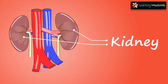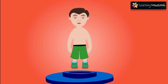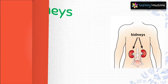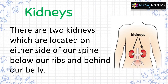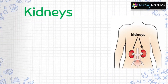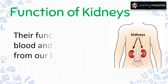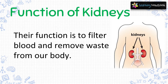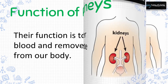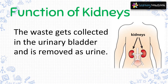The next internal organs are kidneys. There are two kidneys which are located on either side of our spine, below our ribs and behind our belly. The kidneys are bean-shaped organs and are part of the excretory system. Their function is to filter blood and remove waste from our body. The waste gets collected in the urinary bladder and is removed as urine.